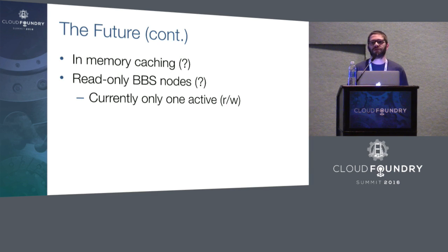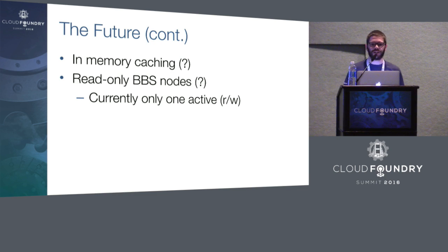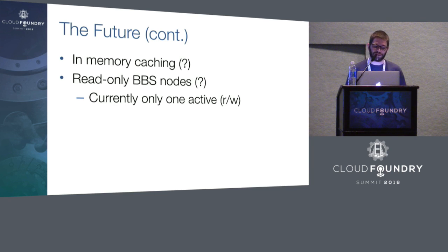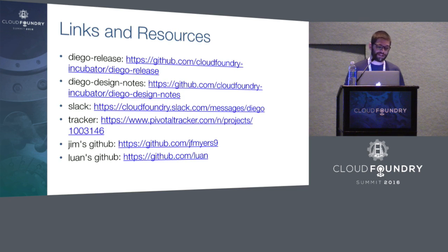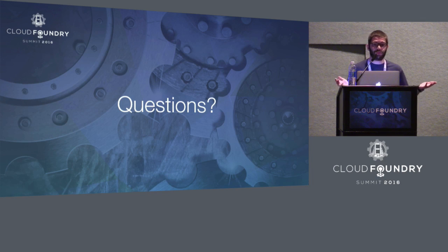Another thing we can also explore in the future is adding a read replica of the API server. Currently the API server is a leader-elected single node for reads and writes — it makes sense for writes to go through one server for consistency, but we could expand the read aspect to scale horizontally. We also have plans to publish these metrics publicly. Here are some links and resources from the talk.